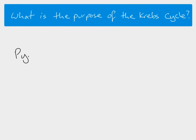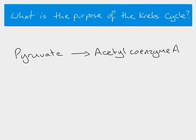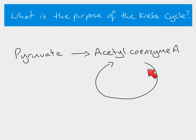So first of all, what's the overall purpose of the Krebs cycle? Well, from glycolysis we end up with pyruvate, and pyruvate then is going to get turned into something called acetyl coenzyme A. This is our link reaction. Acetyl coenzyme A then goes into the Krebs cycle, which basically is a combination of reactions which end up reforming acetyl coenzyme A.